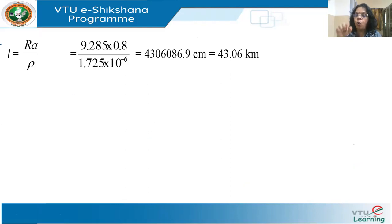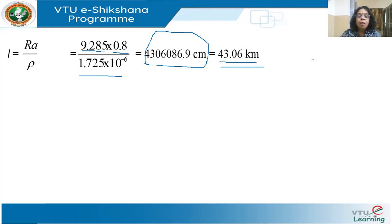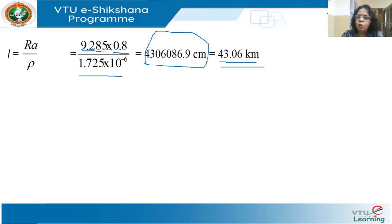The length L = r·a/ρ = 9.285 × 0.8 / (1.725×10⁻⁶) centimeters. Since resistivity and area are both in centimeter units, the result is consistent. This gives L = 43.06 km. This model is valid because the line length is less than 100 km and the voltage is 6.6 kV, which is less than 20 kV, so the short line model is appropriate.